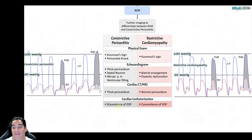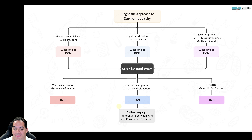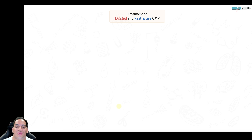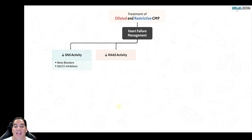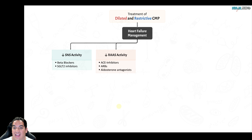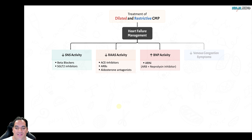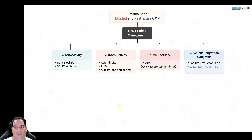For treatment: dilated and restrictive cardiomyopathy present like heart failure, so treat them like heart failure — reduce sympathetic nervous system activity with beta blockers and SGLT2 inhibitors, reduce RAAS activity with ACE inhibitors, ARBs, or ARNIs and aldosterone antagonists, increase BNP activity via ARNIs, and decrease venous congestion symptoms with diuretics and sodium and fluid restriction.